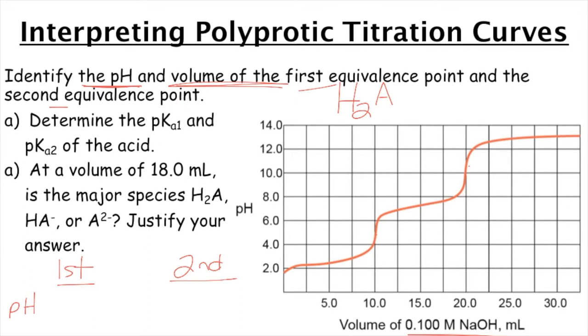Okay. So first equivalence point is right here, and it looks like it is occurring at a pH of around 5. Okay. And then here is the second one, and this one looks like it's occurring at a pH of around 10.